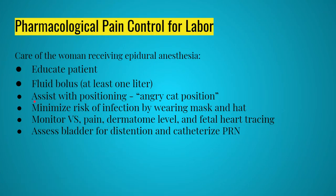There's variation in facilities, but where I work most people in the room have to wear at least a hat and a mask — everyone except mom, since she won't contaminate her own back. Everyone else should wear a mask to decrease droplets in the air, because you can give somebody meningitis if there's an infection — it's a strict sterile procedure. Usually we allow one support person to stay in the room. That person needs to stay near mom and away from the sterile field. You're going to monitor vital signs frequently — I cycle blood pressures every two minutes.